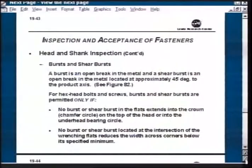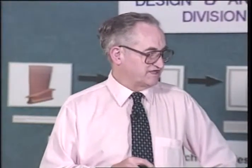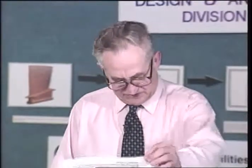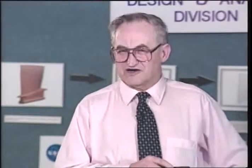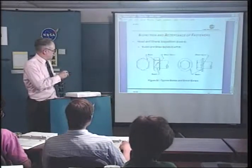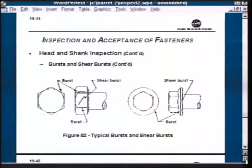Here is a shear burst - that's an open break in the metal from forming. You can accept these only if it's in the flats and extends into the crown chamfer circle at the top of the head or in the under-head bearing circle, and none of them are located at the intersection of the wrenching flats reducing the width to cross corners below its specified minimum. In other words, you can accept some of these, once again if they are so shallow that they don't look like a crack itself. This one amounts to just a little dent on the corner of the flat - that would probably be acceptable as long as it did not look like a crack itself.